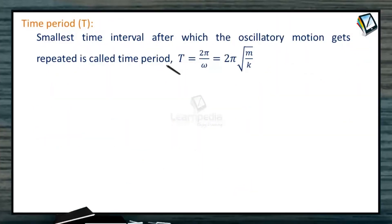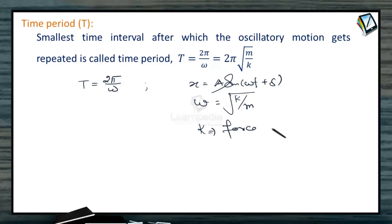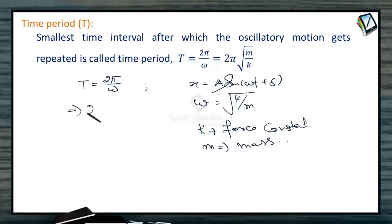Time period is 2 pi by omega. In the case of x equal to a sin(omega t plus delta), x is the solution only when omega equals the square root of k divided by m, where k is the force constant of the system and m is the mass of the particle.